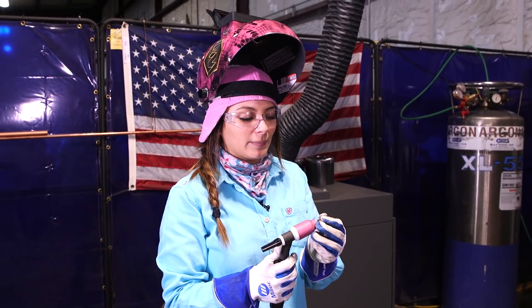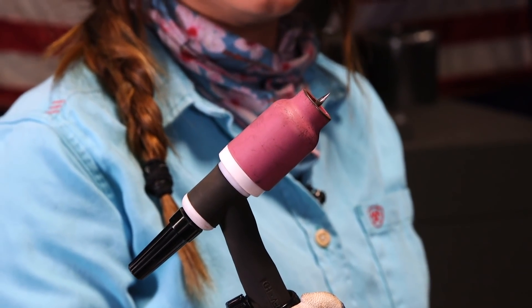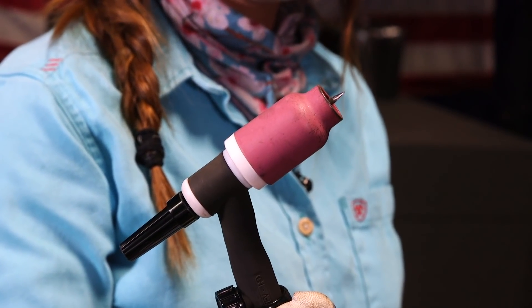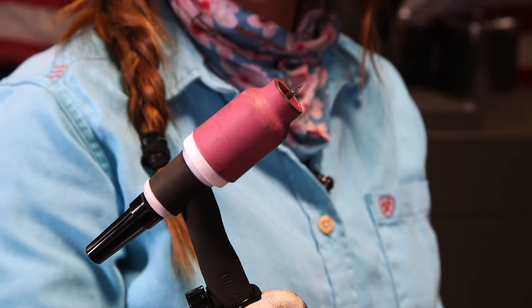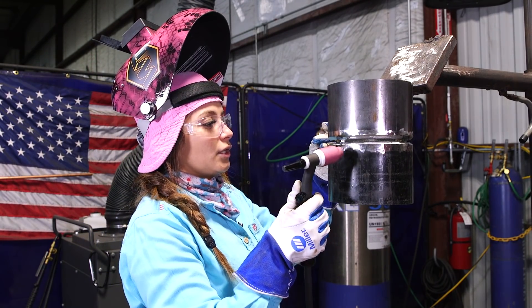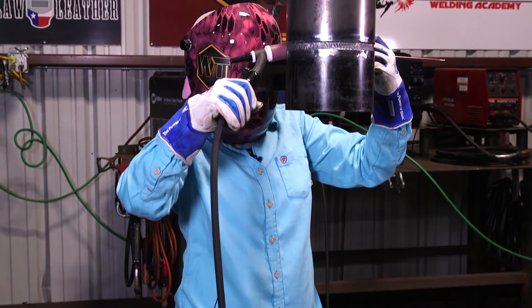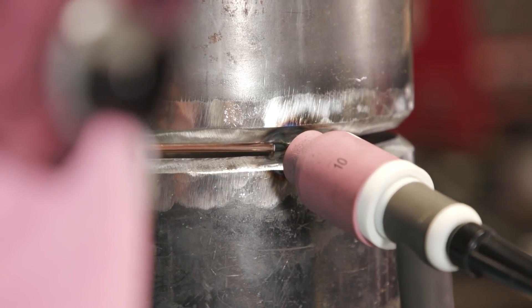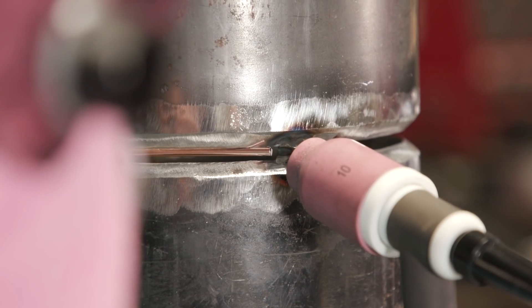Whenever you start, you want to make sure to always put a brand new tungsten. I'm going to make sure that it's about half an inch poking out, and I'm going to be using a size 10 cup. First things first, you want to make sure you position yourself comfortably and have the tungsten pointing up, and you always want to make sure you keep your wire behind the top bevel.